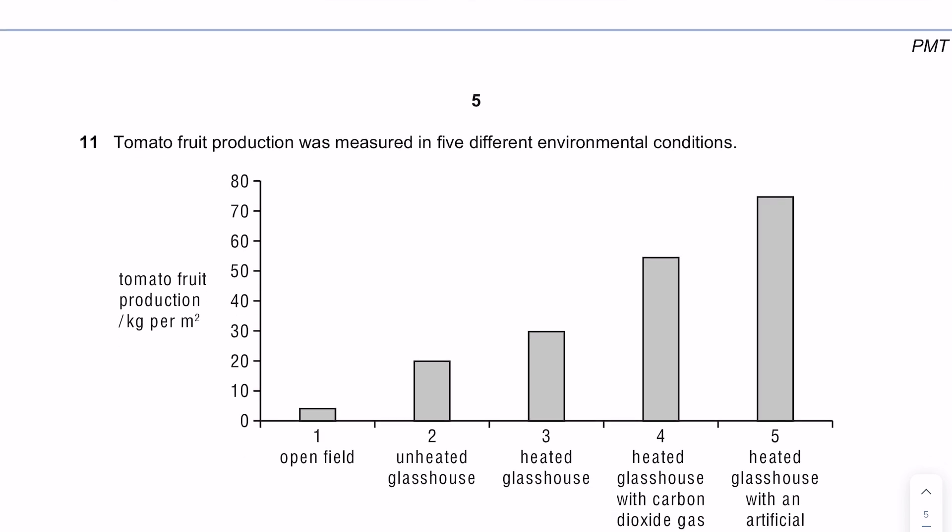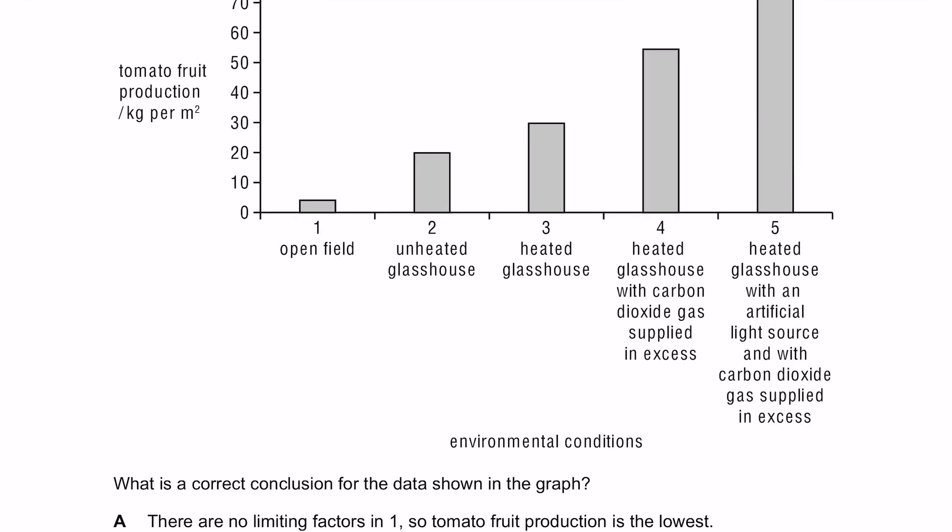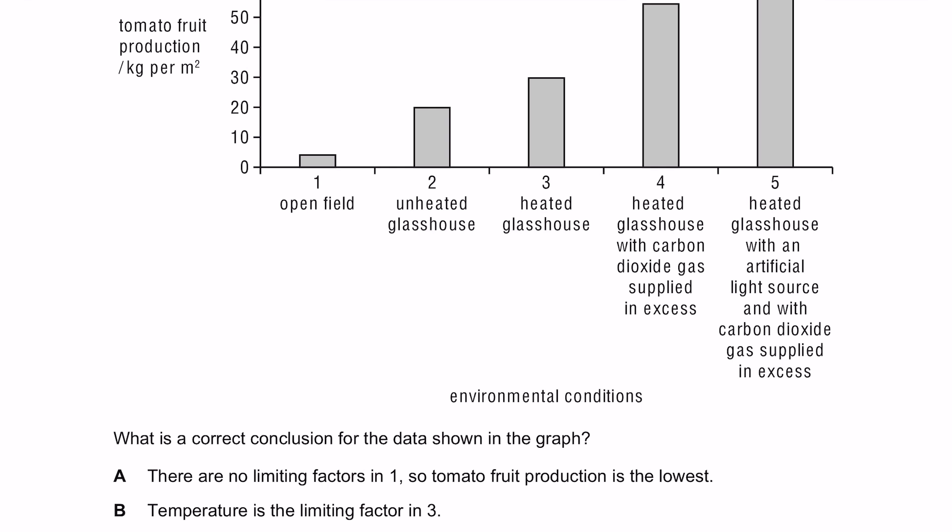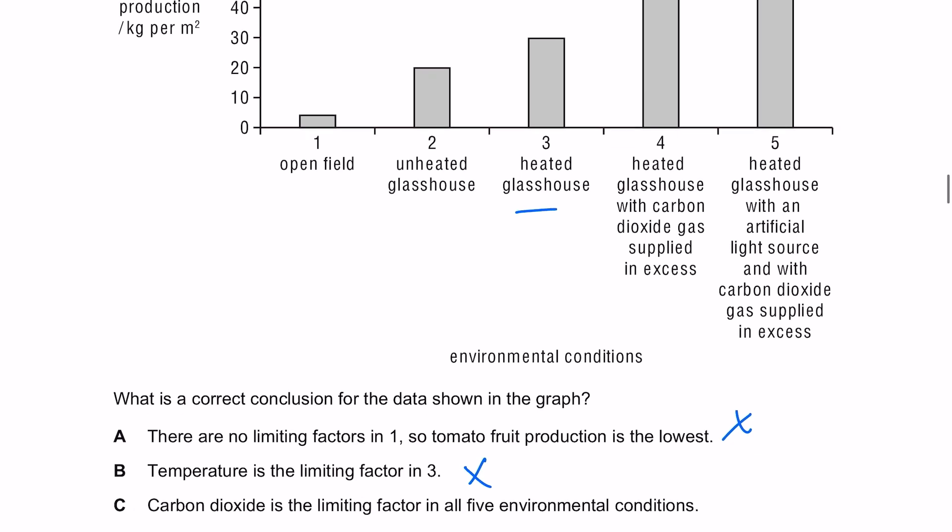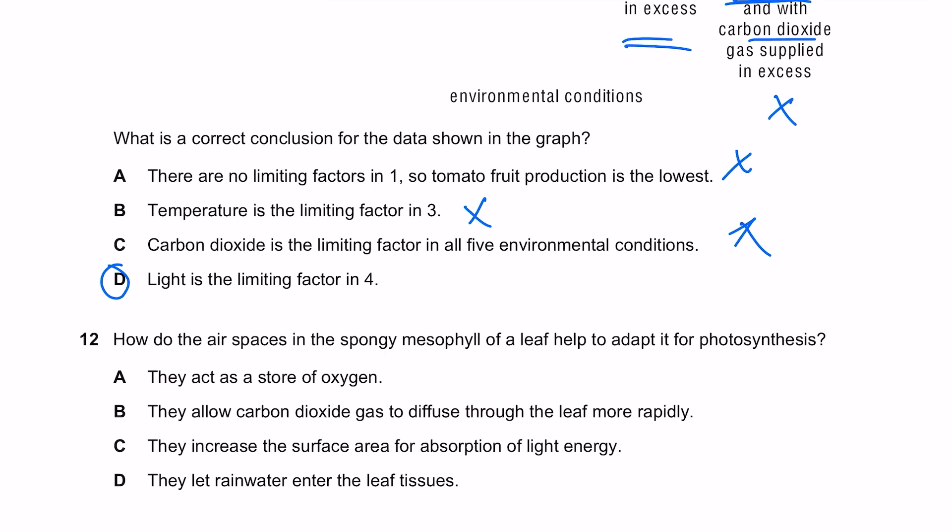Tomato fruit production was measured in five different environmental conditions. What is the correct conclusion for the data shown in the graph? If there were no limiting factors you'd expect it to be the highest. It says here that the CO2 is supplied in excess. Light is the limiting factor in four. It doesn't mention anything about light which it does in five, so the answer here is D.